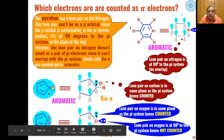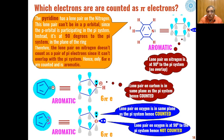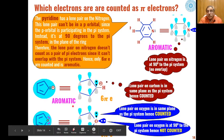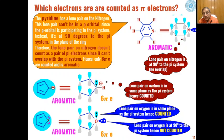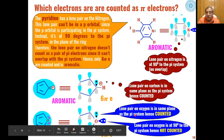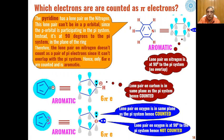In the cyclopentadienyl anion, the lone pair or negative charge is in the same plane as the other pi electrons, so it participates in the overlap — giving 6 pi electrons total, making it aromatic. In furan, there are two lone pairs on oxygen: one is in the same plane as the pi system and is counted, while the second is at 90 degrees and is not counted. So there are 6 pi electrons in furan, making it an aromatic compound.